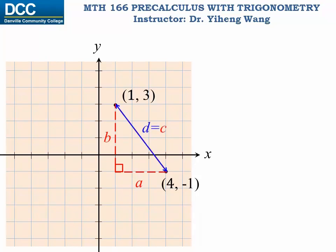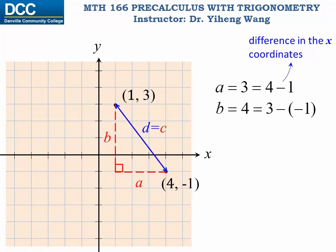From this right triangle, we can tell that a is 3, which is the difference in the x coordinates of these two points, 4 minus 1. And b is 4, which is the difference in the y coordinates of these two points, 3 minus negative 1.